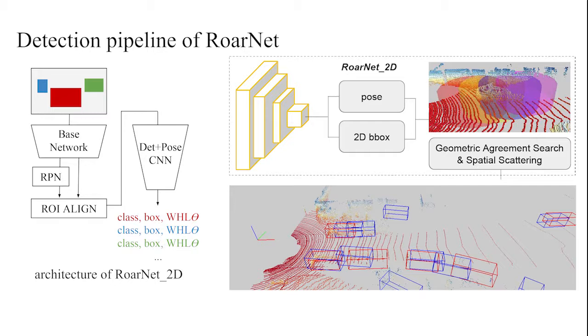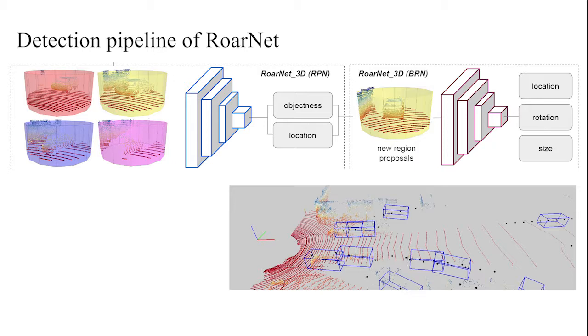Centered on each location prediction, we set region proposals which have a shape of a standing cylinder. Taking the prediction errors in bounding box and pose into account, there can be multiple region proposals for a single object.